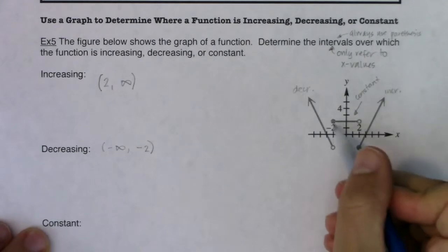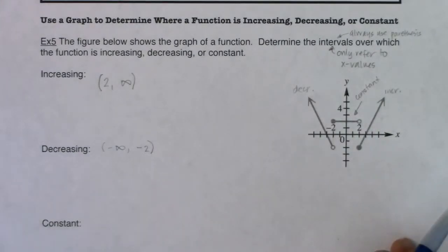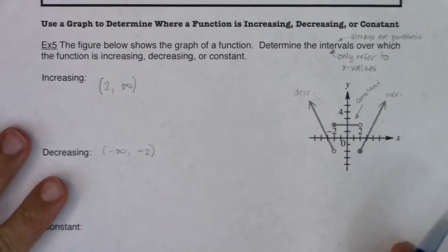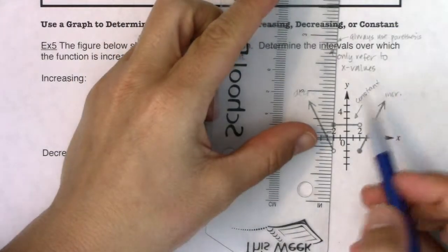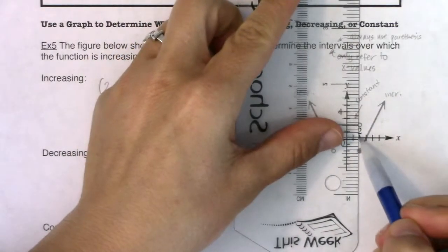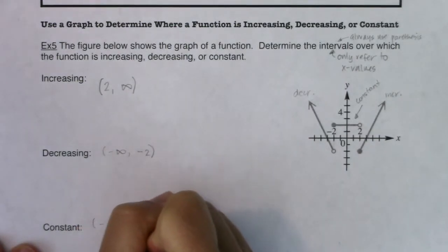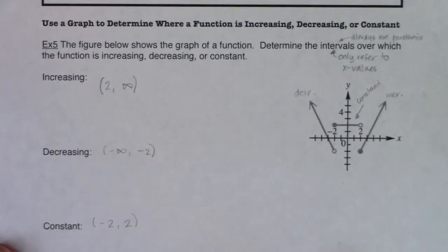And then I was constant from this part of my graph to this part of my graph. And again, if you look at the x coordinates, if you look at the x coordinates here, it's negative 2 to positive 2. So I was constant between negative 2 and positive 2. And that's increasing, decreasing.